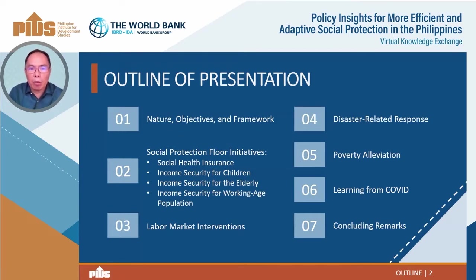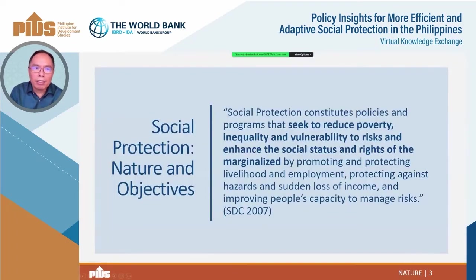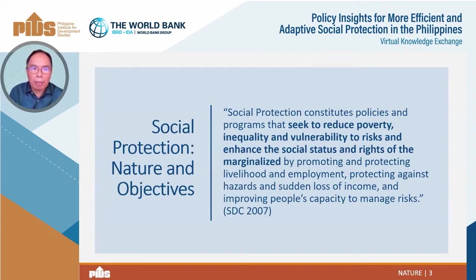It starts with defining the scope of social protection and organizing the presentation using the official social protection framework promulgated by the Inter-Agency Social Development Committee. I'll comment on the components as I go on and provide a concluding remark. The key words I'd like us to remember are that social protection is about policies and programs that seek to reduce poverty, inequality and vulnerability to risks, and enhance social status and rights of the marginalized.